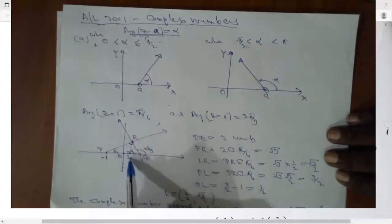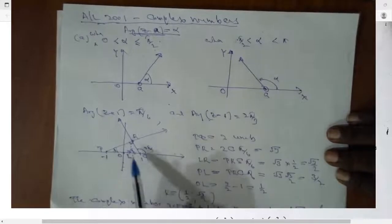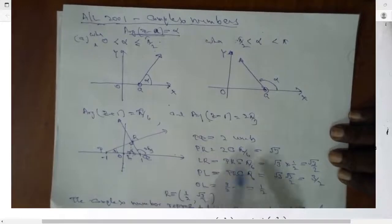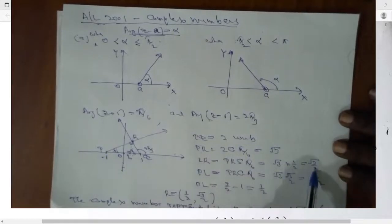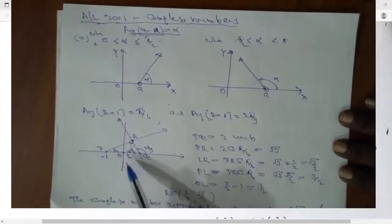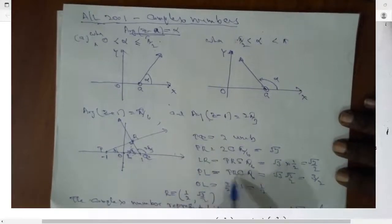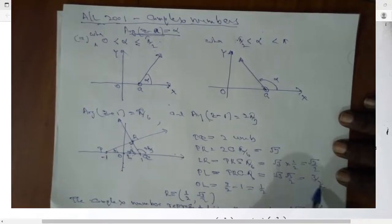you can take, put up the perpendicular drawn from R to X axis, capital L. Then LR is PR sin 5 pi by 6, that is root 3 by 2. PL you can calculate. PR cos pi by 6, that is root 3 by 2.